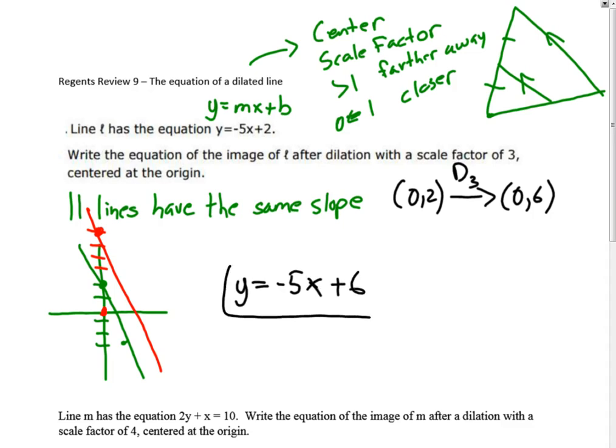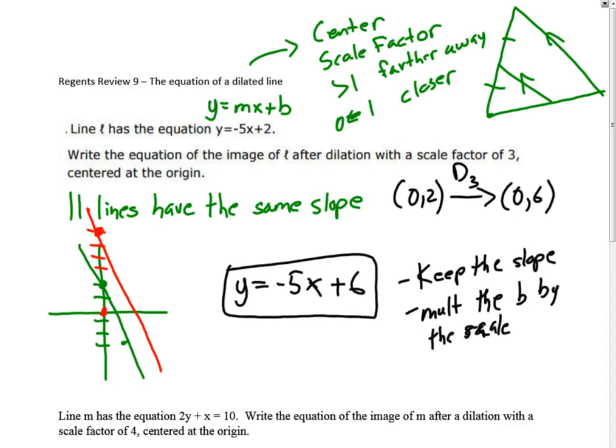You keep the slope. We're going to kind of summarize that. Keep the slope, and then the second thing is multiply the b value, the b, by the scale factor.